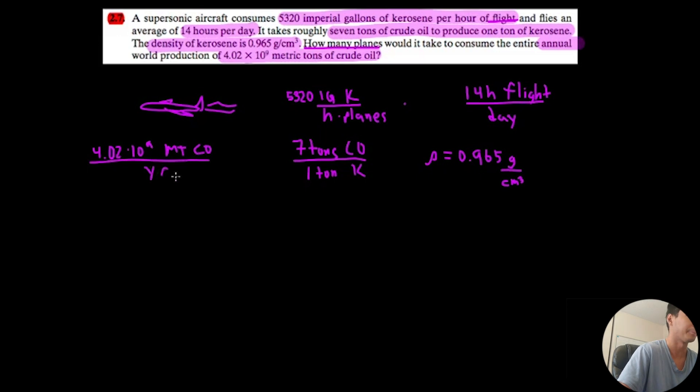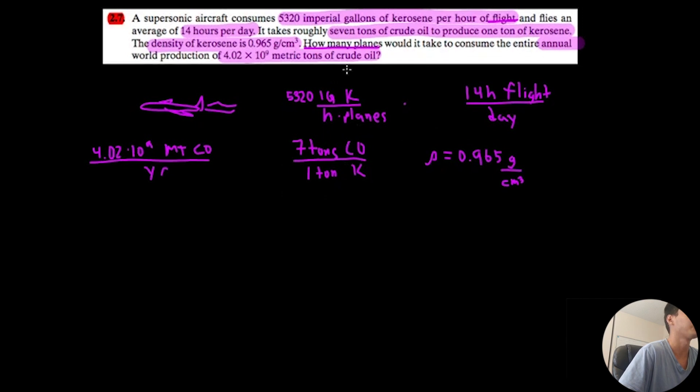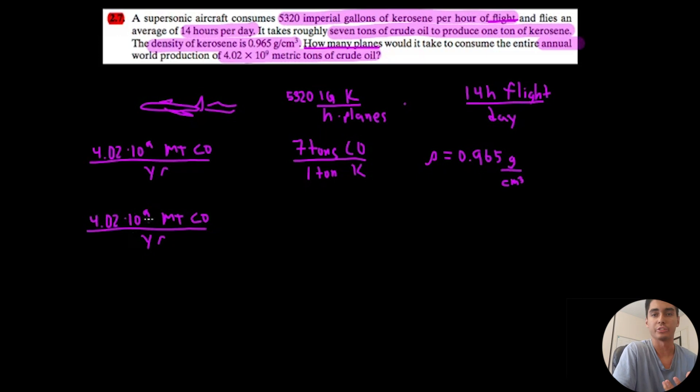Game plan: we have to convert what we know and use these conversion factors to determine the number of planes. Before continuing — if you're actually studying for this class, I highly recommend that you practice by yourself. Stop watching the video and just try it. Did you get it? If not, that's alright — it can be very tricky. What we're going to do is start with what we know. I chose to start with the final quantity given: 4.02 × 10⁹ metric tons of crude oil produced every year, and convert that into the rate that the planes use.